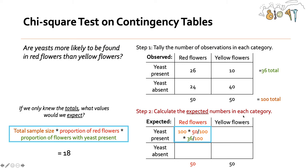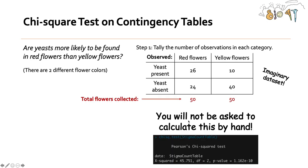Step two: calculate the expected number of flowers in each category. So if we didn't know what these breakdowns were, we just knew the total of yeast flowers with yeast present and the total of flowers with yeast absent, we only knew the total number of red flowers and the total number of yellow flowers, what would we guess?